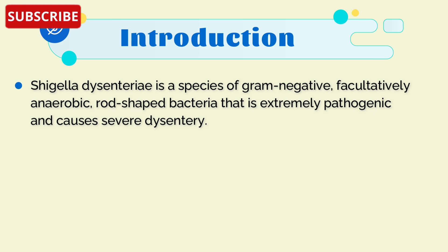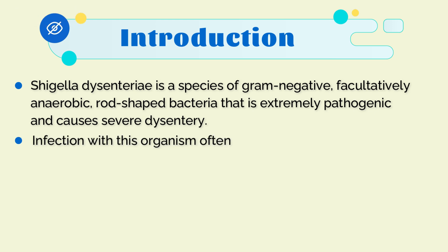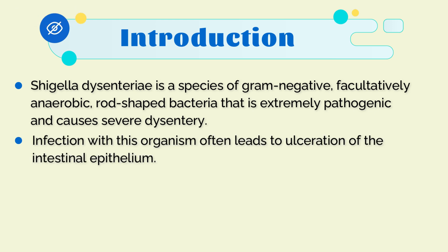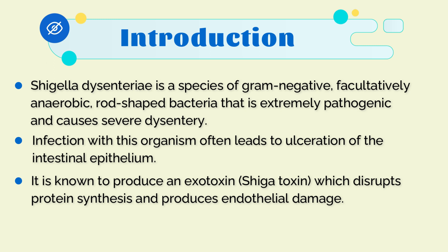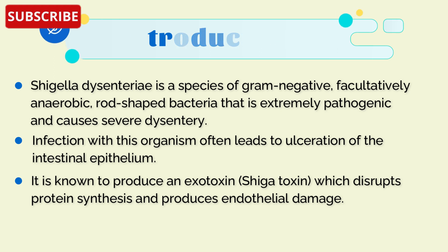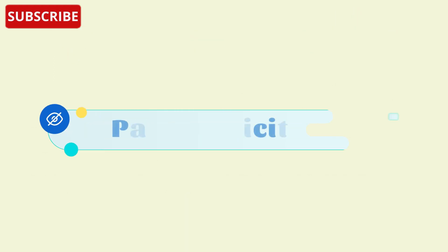Shigella dysenteriae is a species of gram-negative, facultatively anaerobic, rod-shaped bacteria that is extremely pathogenic and causes severe dysentery. Infection with this organism often leads to ulceration of the intestinal epithelium. It is known to produce an exotoxin — Shiga toxin — which disrupts protein synthesis and produces endothelial damage.